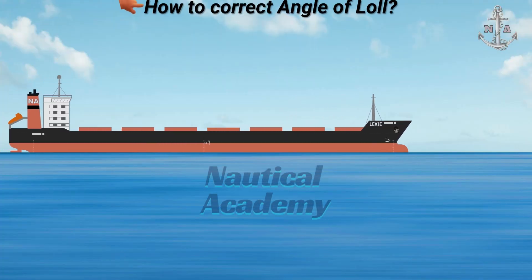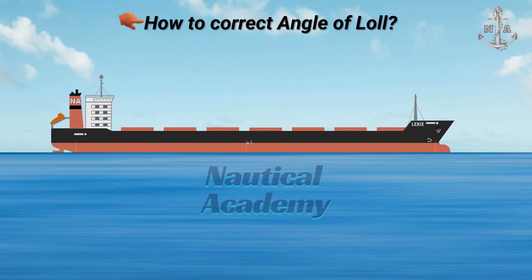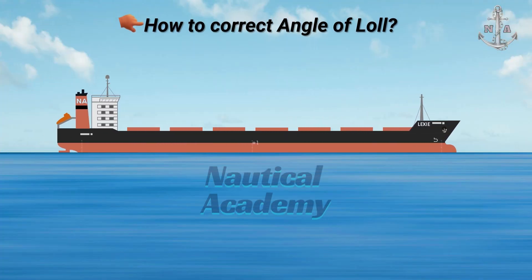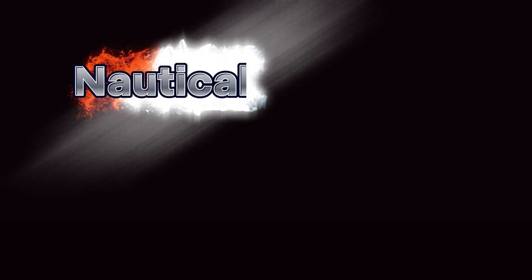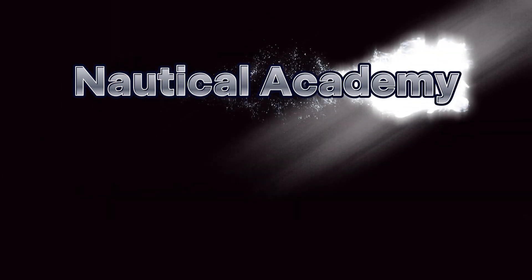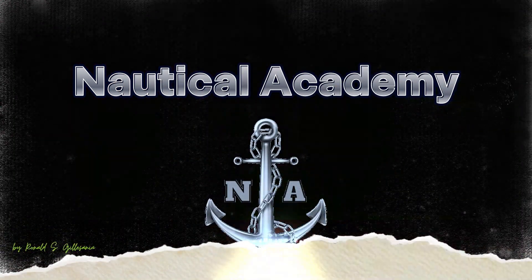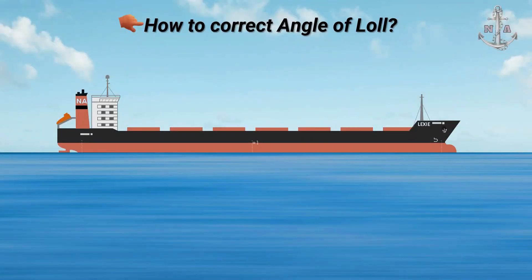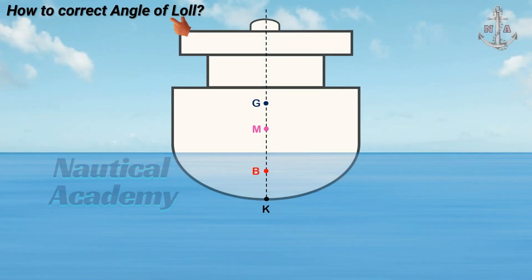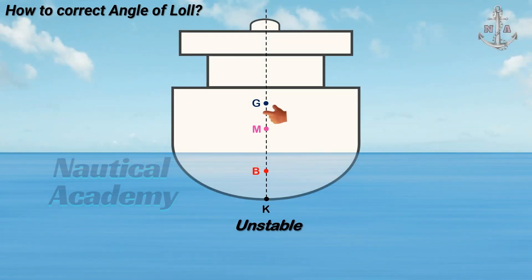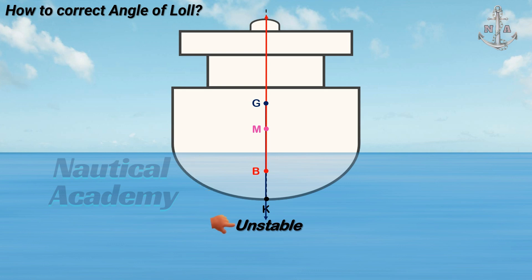In today's video, we'll discuss the actions required to correct the angle of loll. Angle of loll occurs when a vessel is in an unstable condition, meaning her center of gravity is above the metacenter. Before we proceed to the corrective measures, let's first understand what it means for a ship to be in an unstable condition.